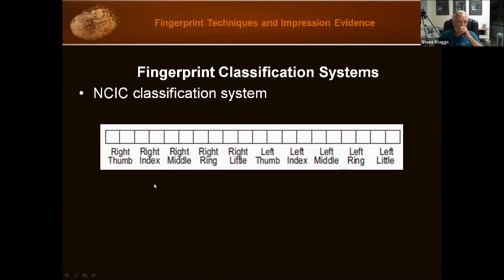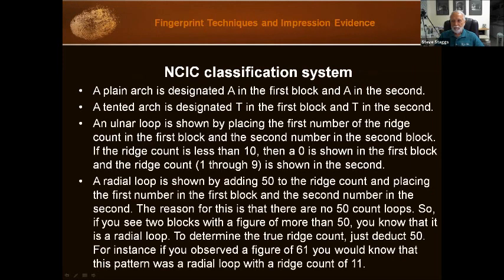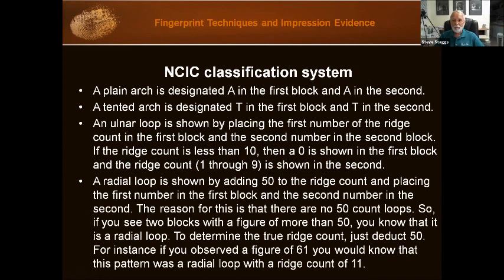Let's look at the rules. For one finger there are two boxes. A plain arch is an 'A' in the first block and an 'A' in the second — so double A means it's a plain arch. A tented arch is a 'T' in the first block and a 'T' in the second — so double T.